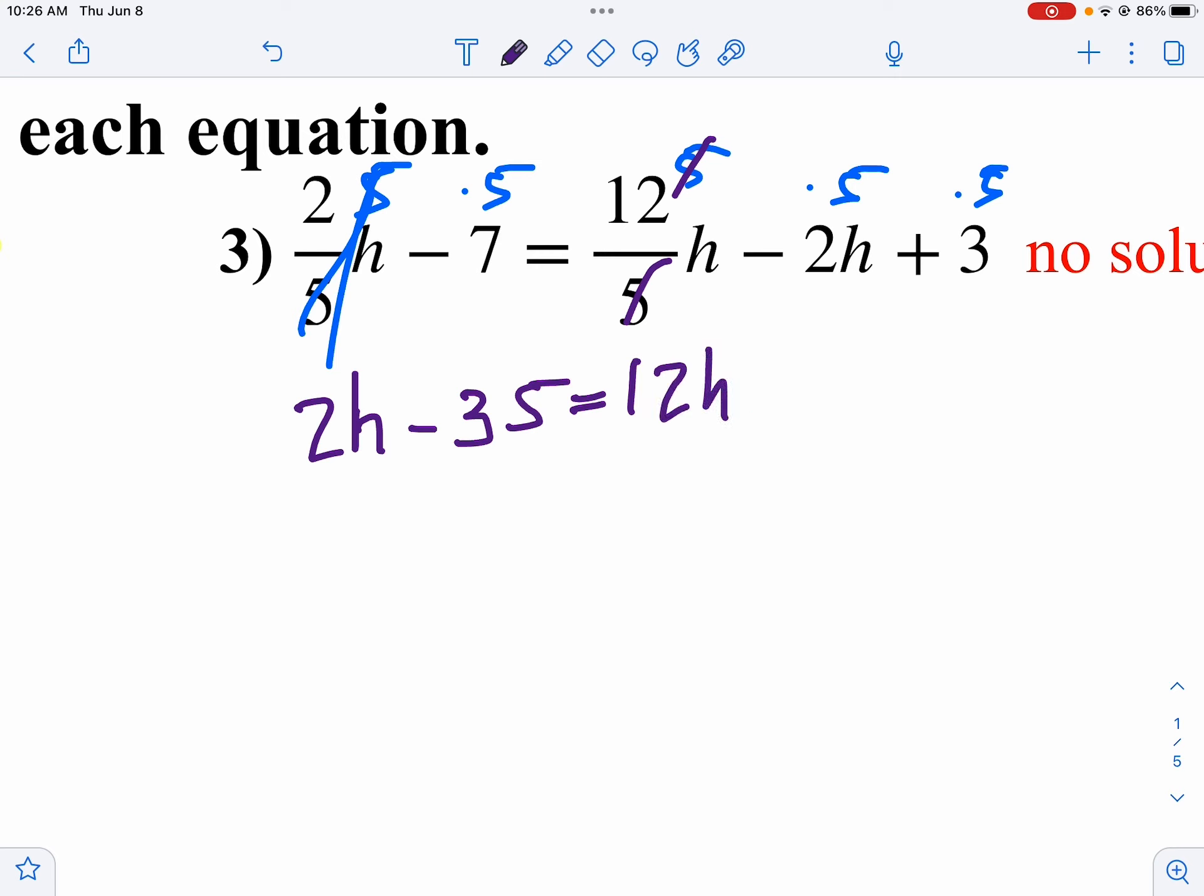2h plus 5 times 3 is 15. Now, I can combine my like terms on my right side, so I'll do that first. So then I get 2h plus 15 on the right side. I got 2h minus 35 on the left side.